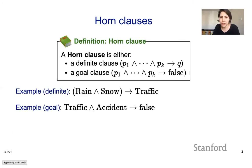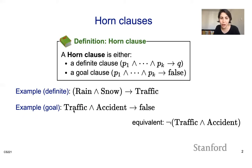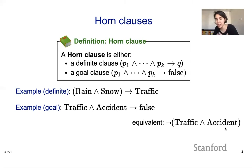In addition to definite clauses, we also have a thing called a goal clause. A goal clause is a clause of the form p1 and through pk implying false. For example, traffic and accident implying false is a goal clause. A horn clause is a clause that is either a definite clause or a goal clause. Goal clauses are equivalent to the negation of their antecedent — since implication is negation-of-antecedent or consequent, and false goes away, you get a disjunction of negations, such as negation of traffic or negation of accident.